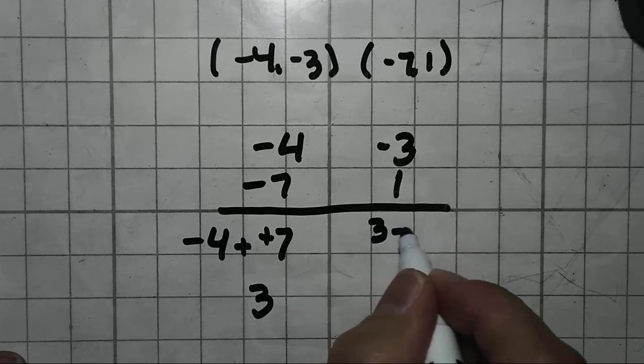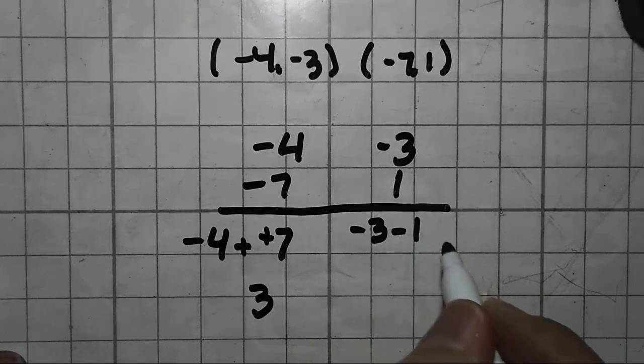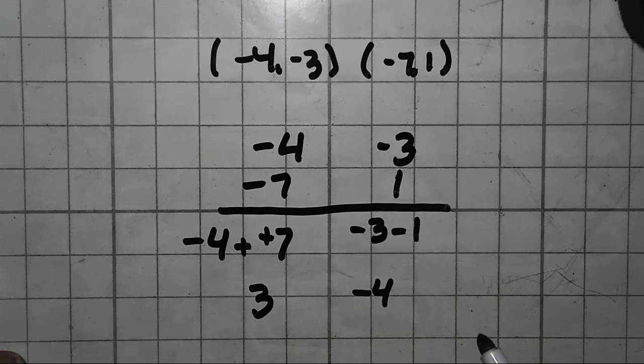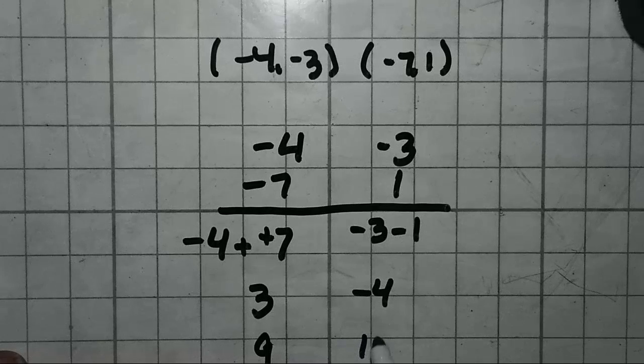Same thing on this side. Top number minus bottom number. Negative 3 minus 1. Negative 3 minus 1 is negative 4. So far so good? Okay. We're going to square this number. 3 squared is 9. 4 squared is 16. And add them together.